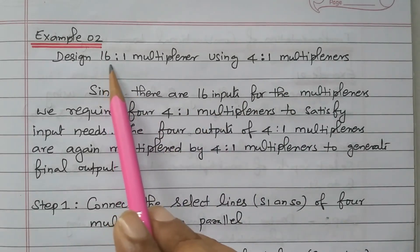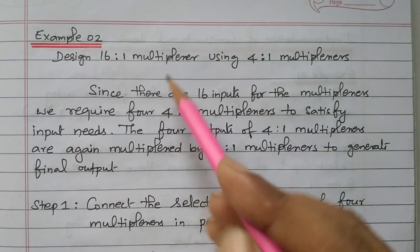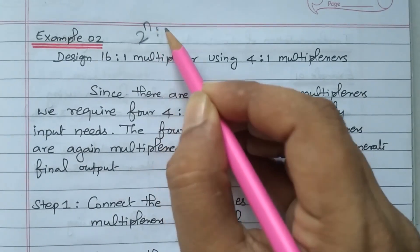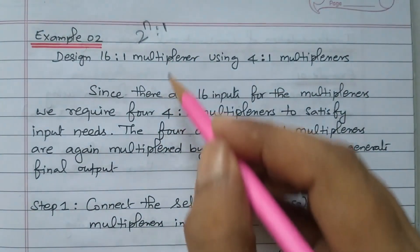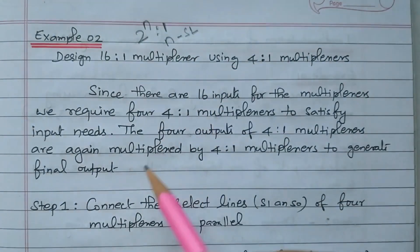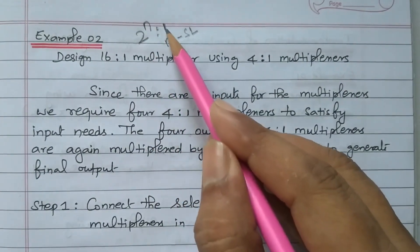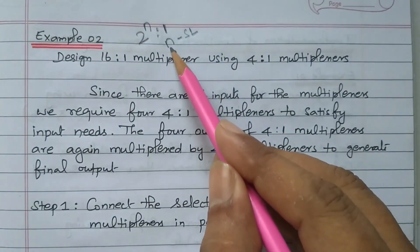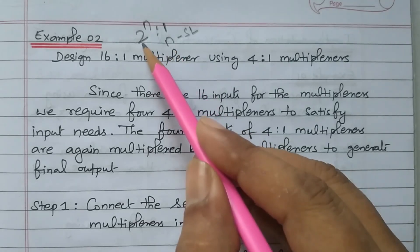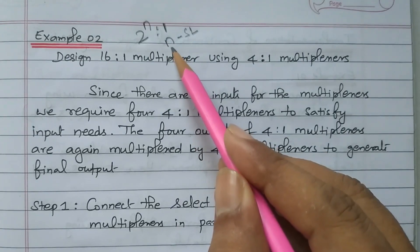We need to design the 16-to-1 multiplexer using the 4-to-1 multiplexer. A multiplexer has 2 to the power n inputs and only one output, with n number of selection lines. This selection line will decide which one of the n inputs will be available at the output.